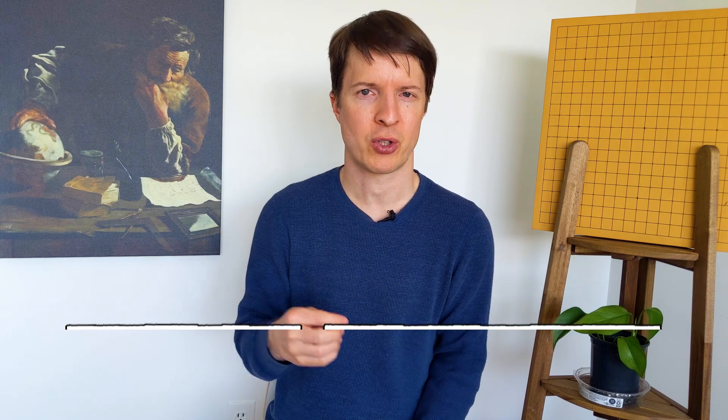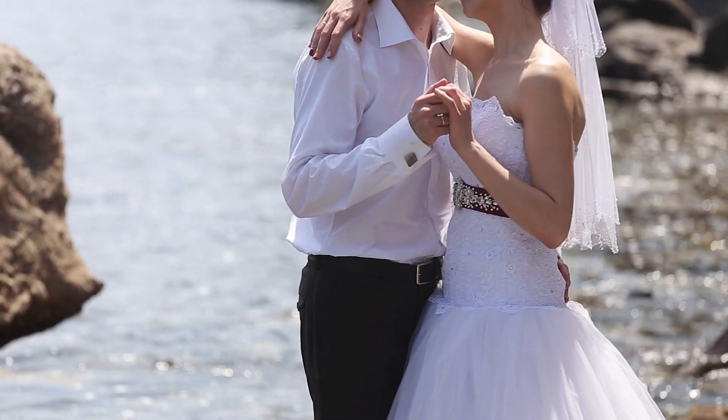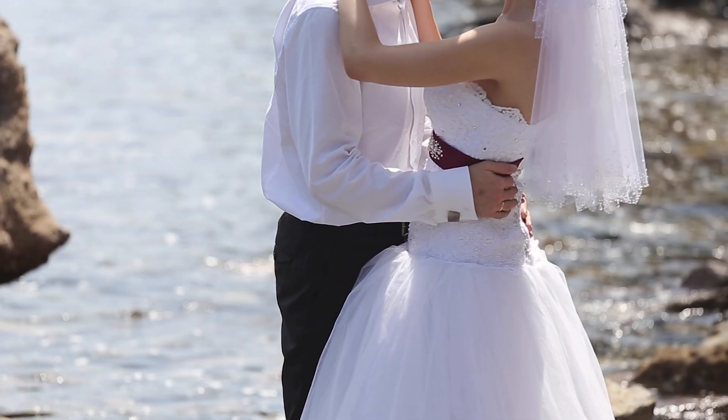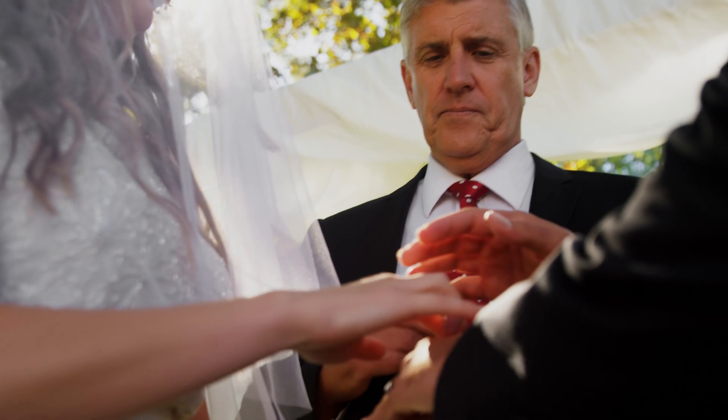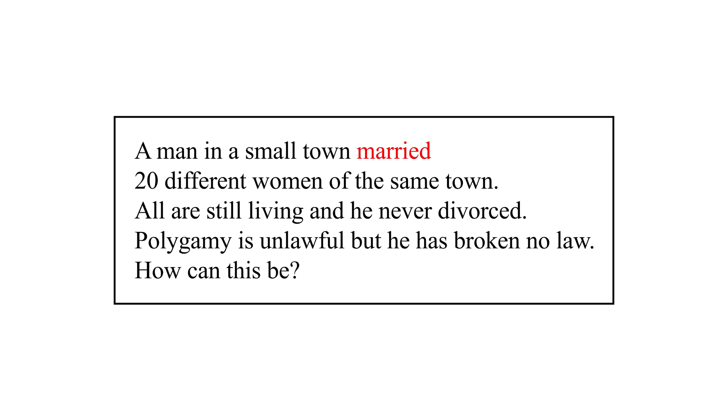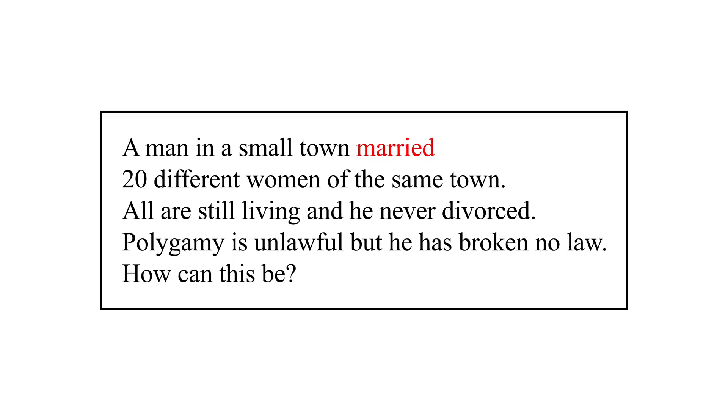All are still living and he never divorced. Polygamy is unlawful, but he has broken no law. How can this be? Insight problems require what is called cognitive restructuring. In this problem, a lot of people initially interpret the word 'married' to mean getting married to someone else, like you married your spouse. But in English, we also use the word 'married' to mean you married two people together, like a priest might do. So to solve this riddle, we have to reinterpret what the word 'married' means — maybe this person is a pastor or rabbi who marries other people.